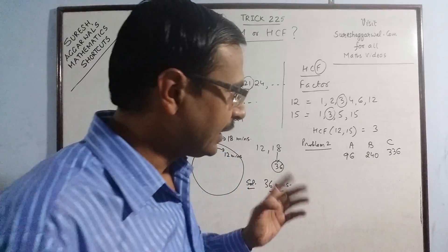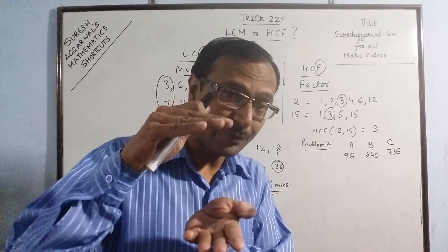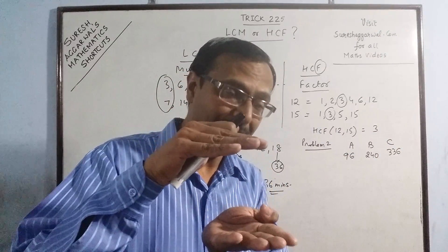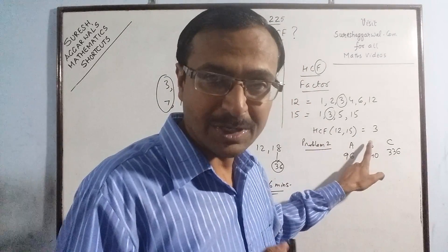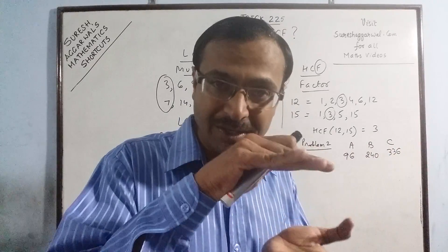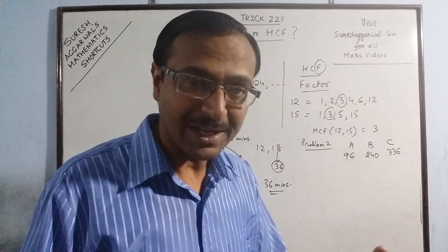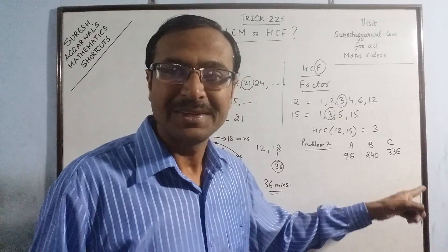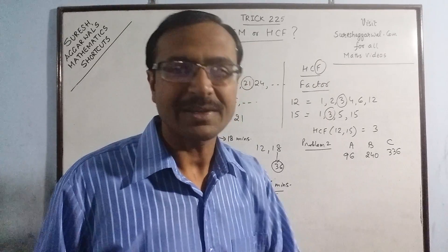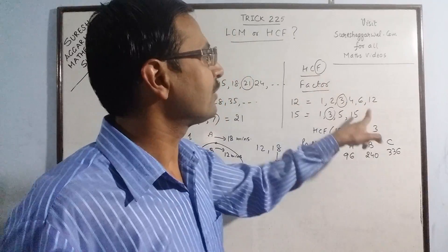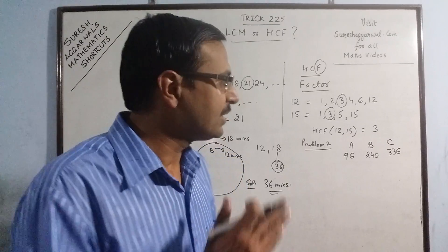If 96 books have to be arranged in stacks, the number of books in one stack will obviously be less than 96. The same number of books must be in stacks for Subject B and Subject C. So the number of books in one stack cannot be more than the original number of books. The answer has to be smaller than the original numbers. Once you understand that your answer must be smaller than these numbers, you can say the concept of HCF has to be used, because HCF is always smaller than the original numbers.